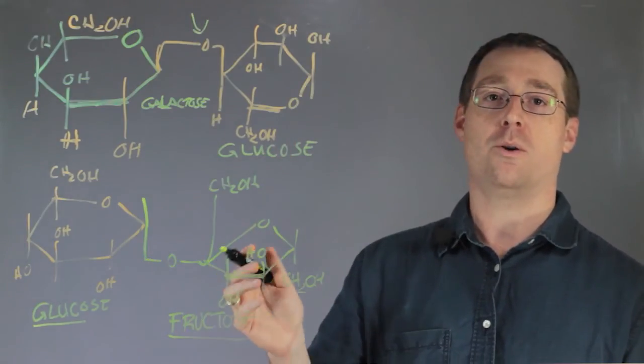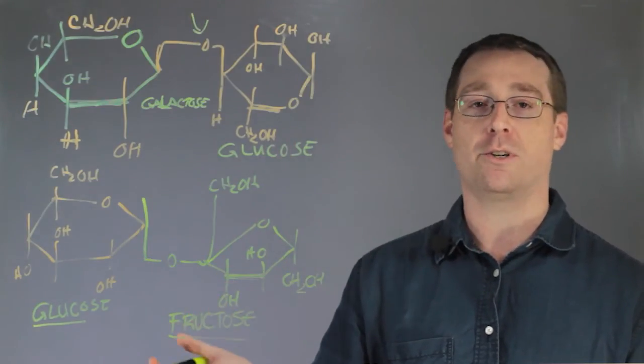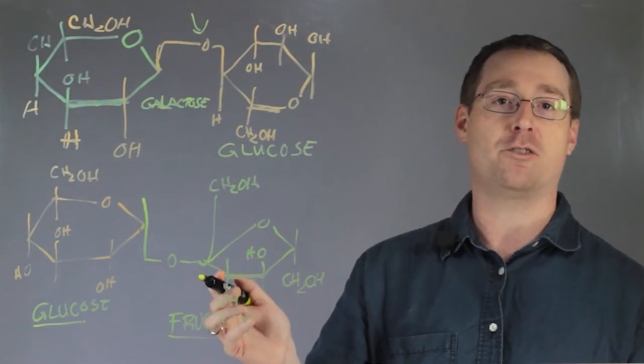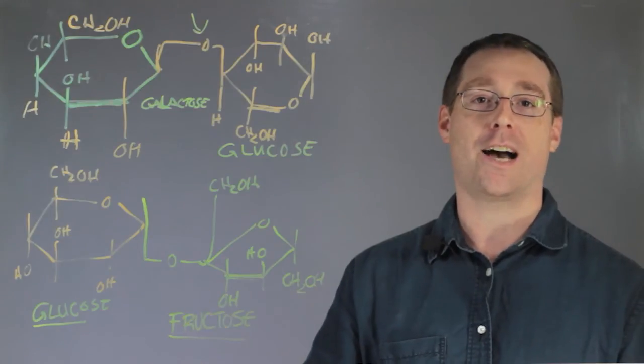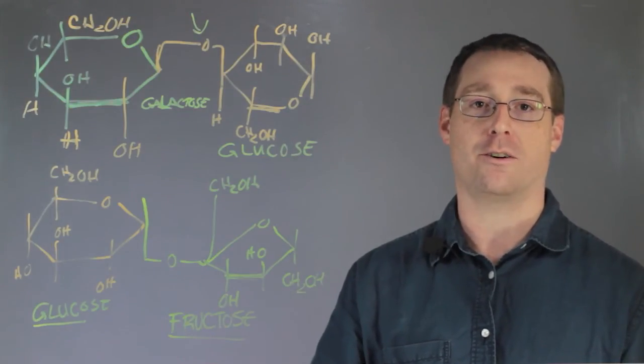Diastereomers and enantiomers comprise different sugar monomers and subsequently unique disaccharides and polysaccharides.